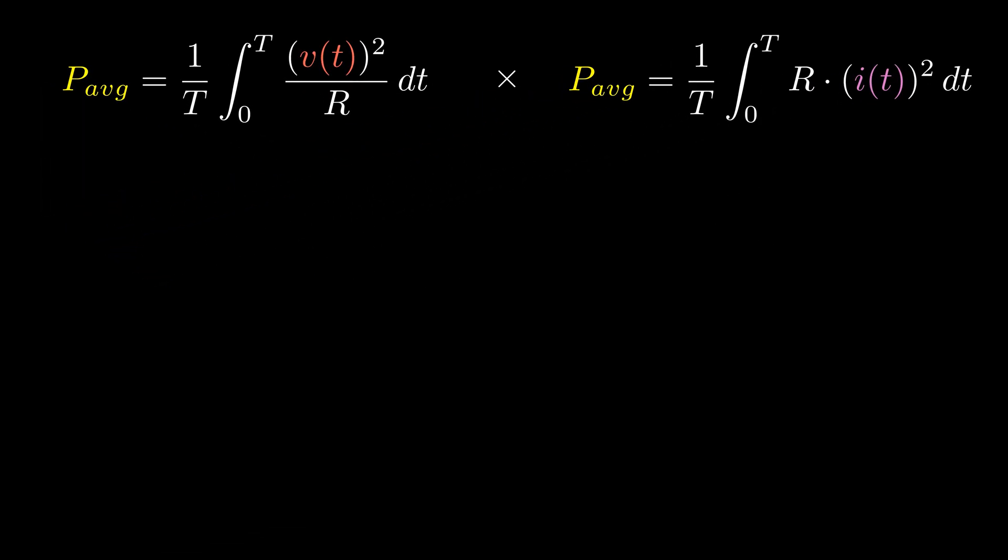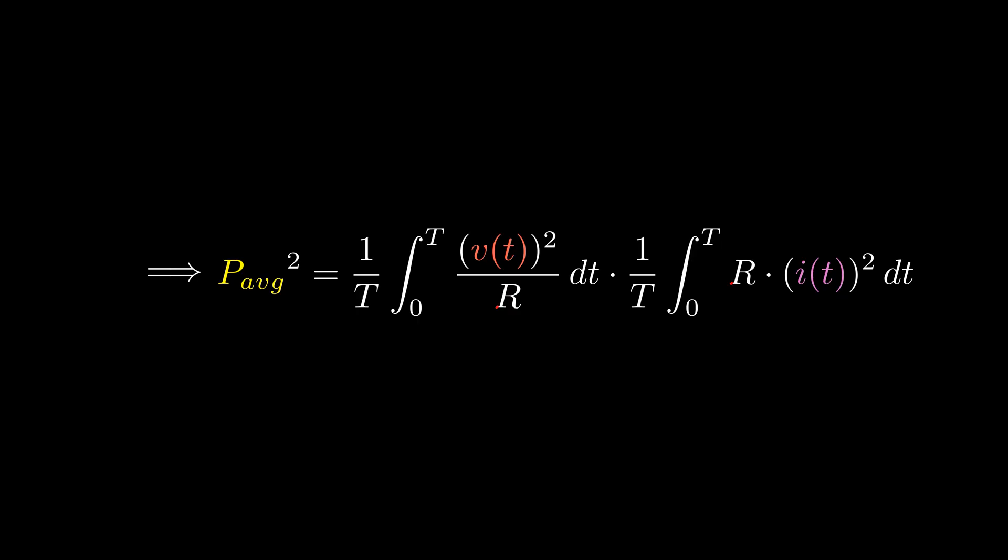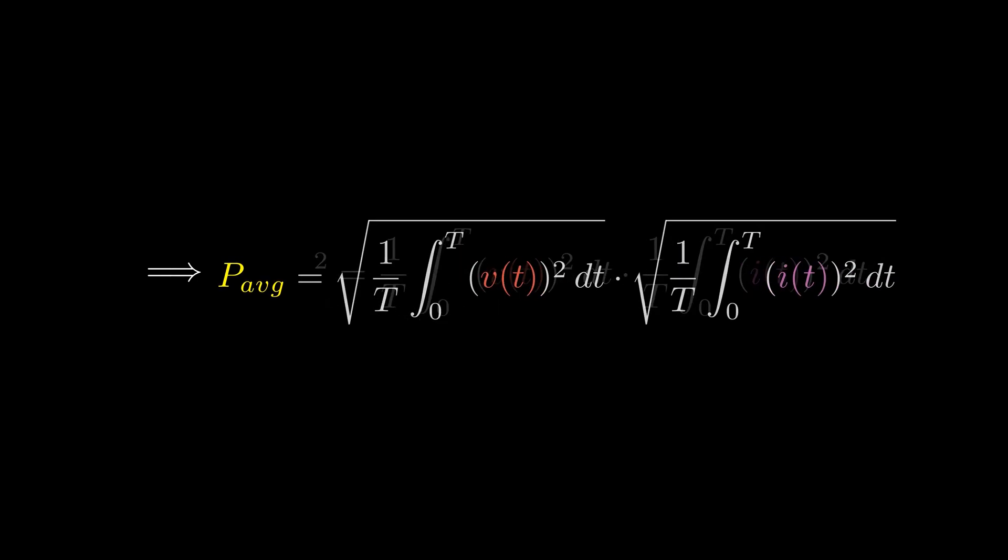We get two different expressions for average power. If we multiply the two expressions, we get an expression for the average power squared. Now we can simplify R and then apply the square root to get back to the average power expression. We can see that we have a first expression that depends only on the current, and the second one that depends only on voltage.